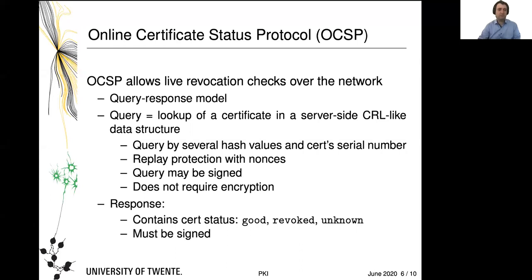OCSP responses have two main status values: good and revoked, which are exactly what you think they are. Good means the certificate is still considered valid; revoked means it is considered revoked. There is, interestingly, a third status: if the certificate is not contained in the server-side data structure, OCSP responds with unknown. The response will always be signed.